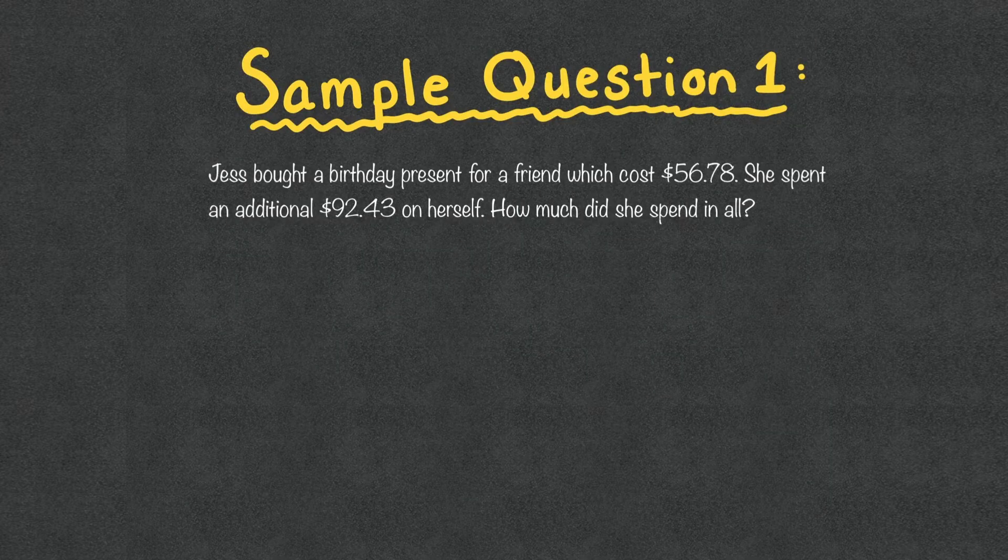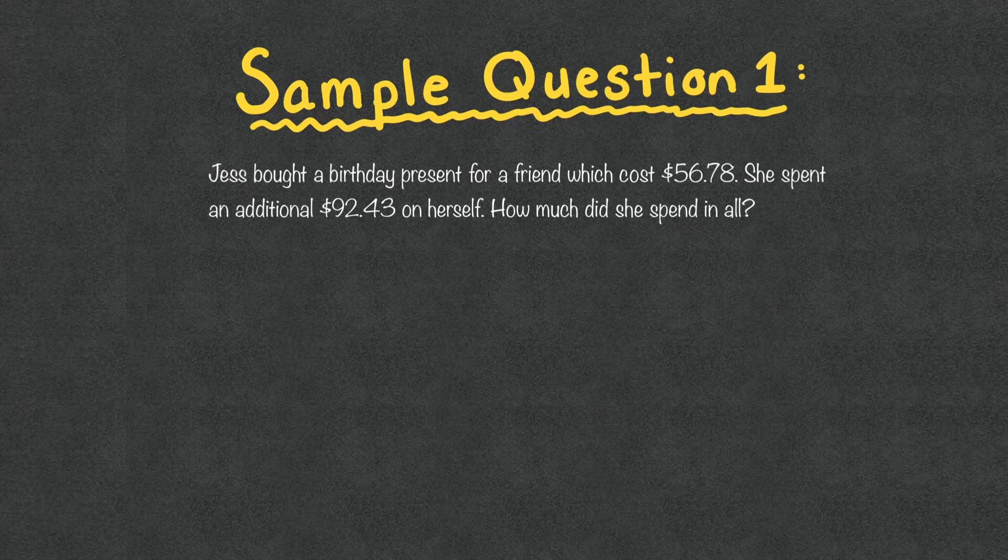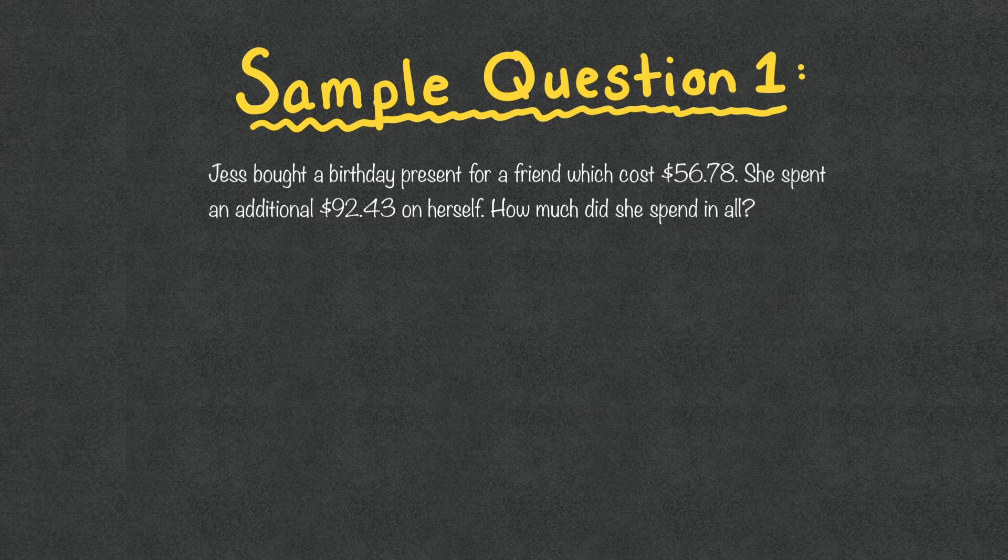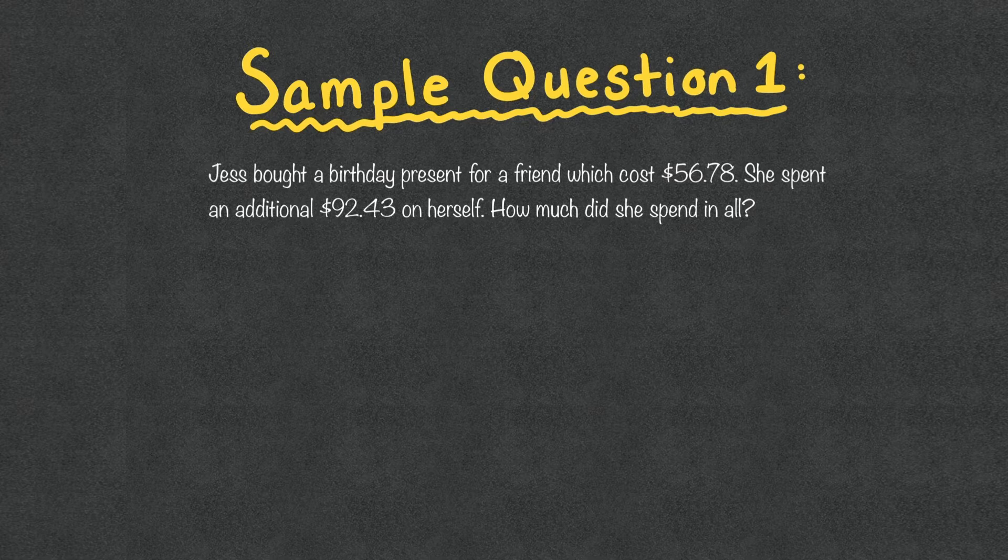So let's go over some sample questions, questions that you're going to see on the TEAS exam. So let's go into those right away. Jess bought a, so we have our sample question number one. Jess bought a birthday present for her friend, which cost $56.78. She spent an additional $92.43 on herself. How much did she spend in all? So again, even though we have a word problem to start, we can still break it down like we normally think.